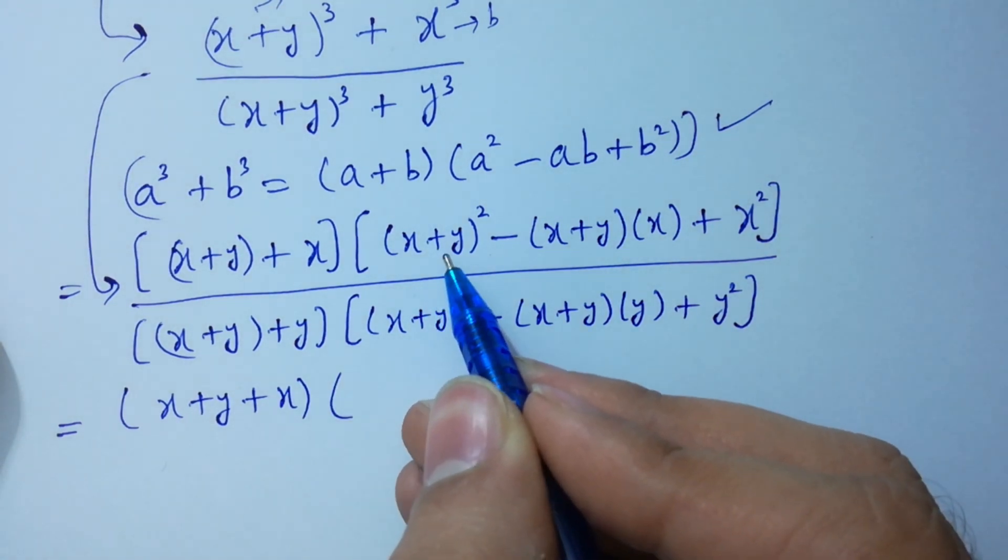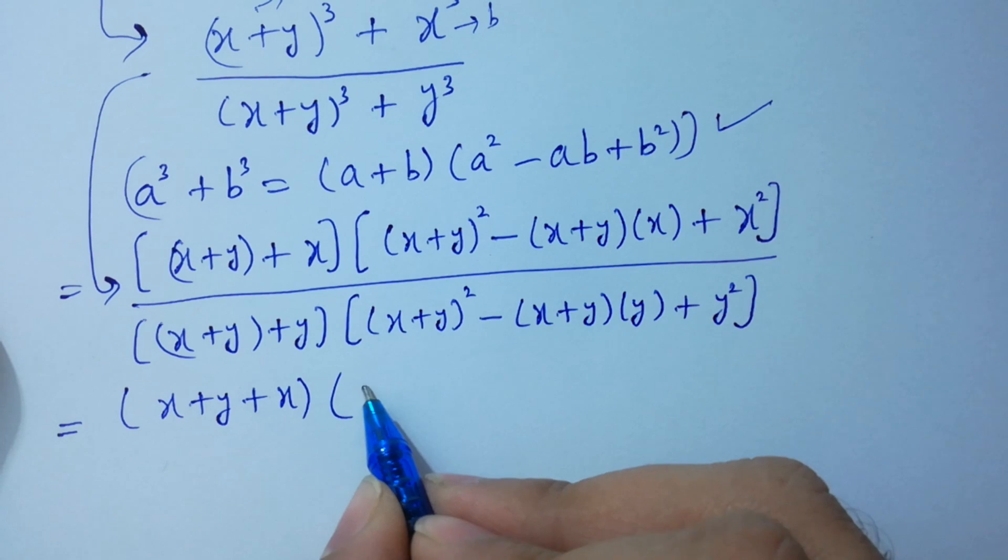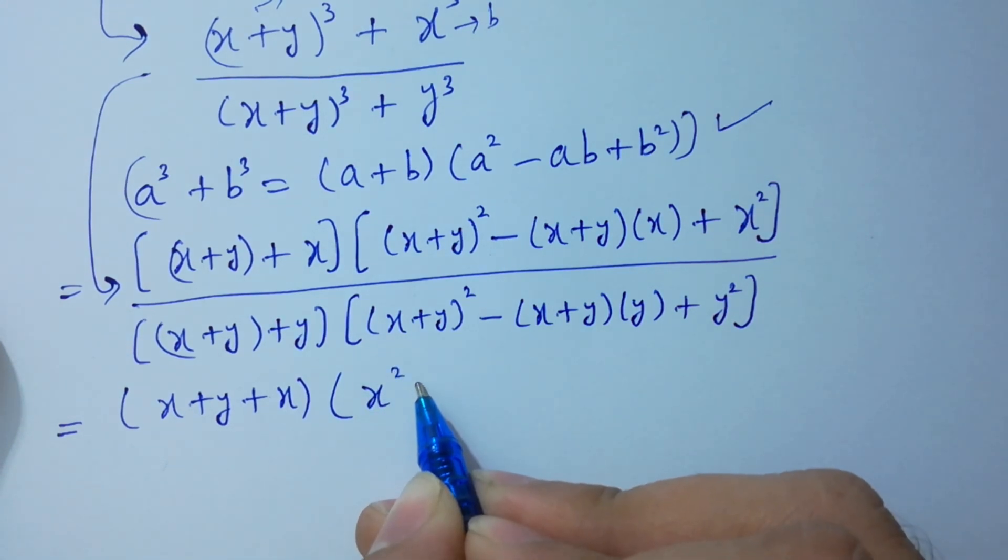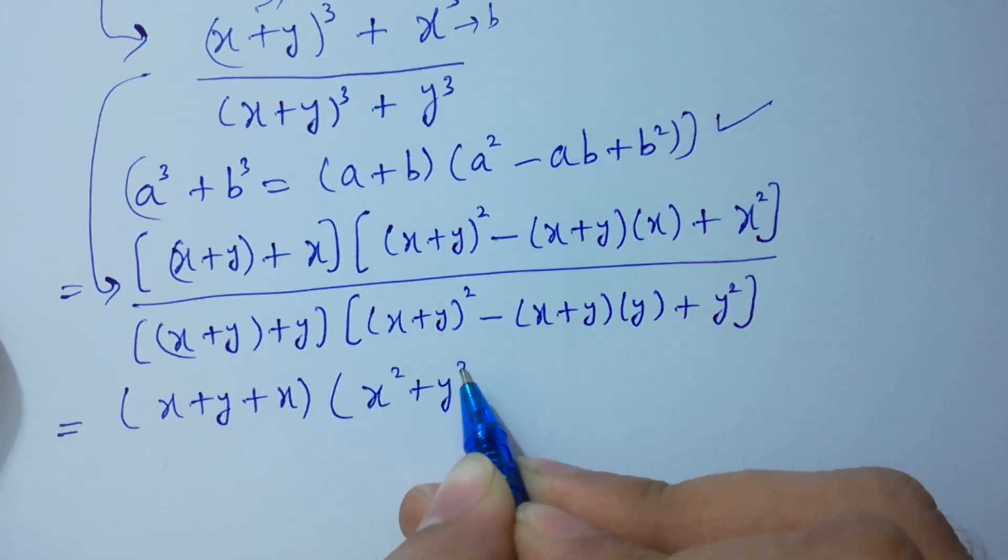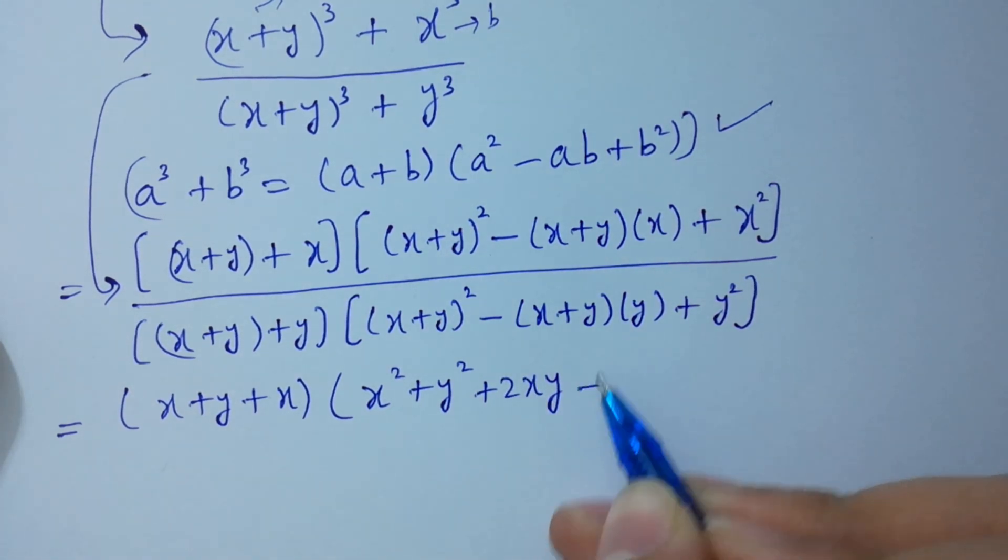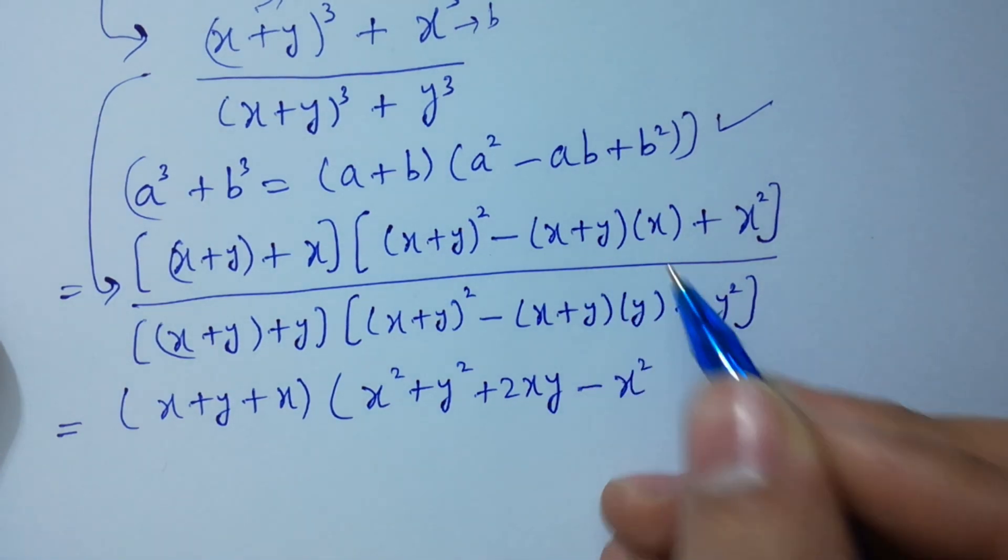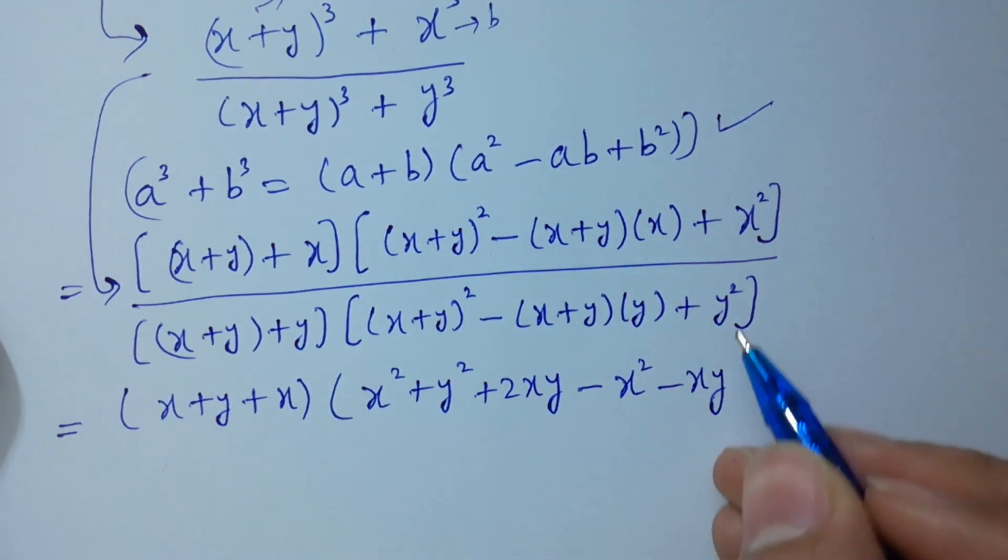Here, apply the formula a plus b whole square: a squared plus b squared plus 2ab. So x squared plus y squared plus 2xy, and here we have minus x square minus xy plus x square.